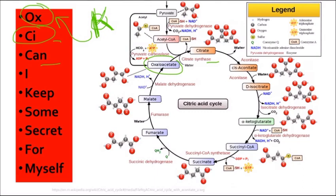is for cis-aconitase, I is for isocitrate, Keep is for alpha-ketoglutarate, Some is for succinyl coenzyme A, Secret is for succinate, For is for fumarate, Myself is for malate. So here are all the components